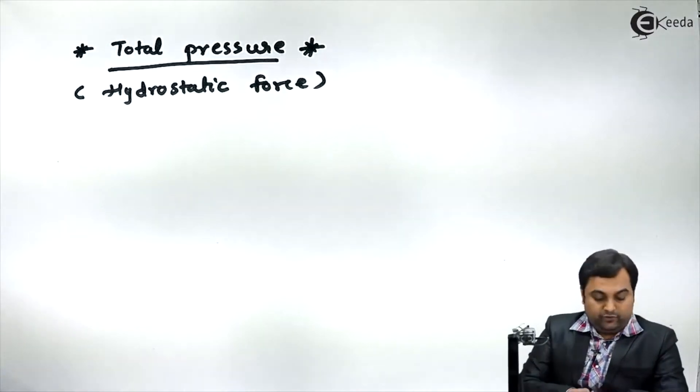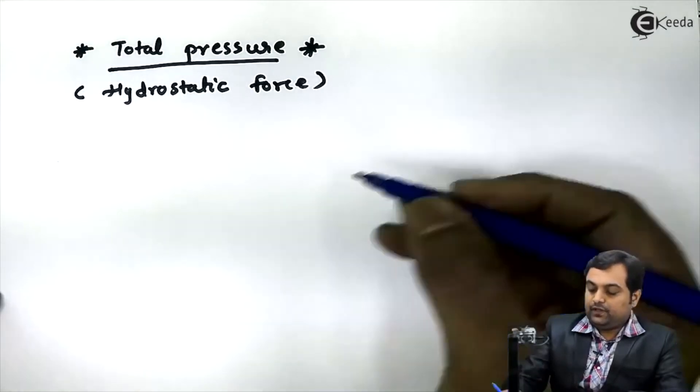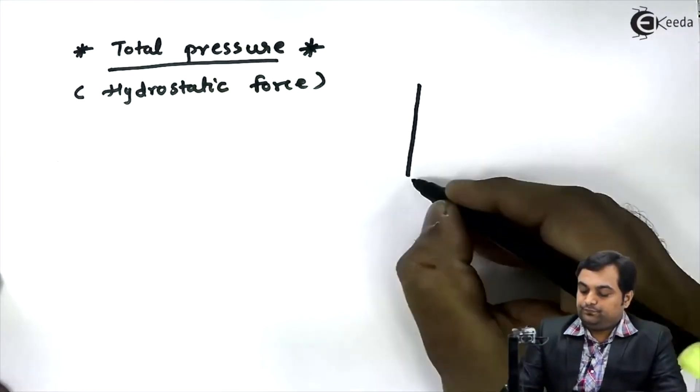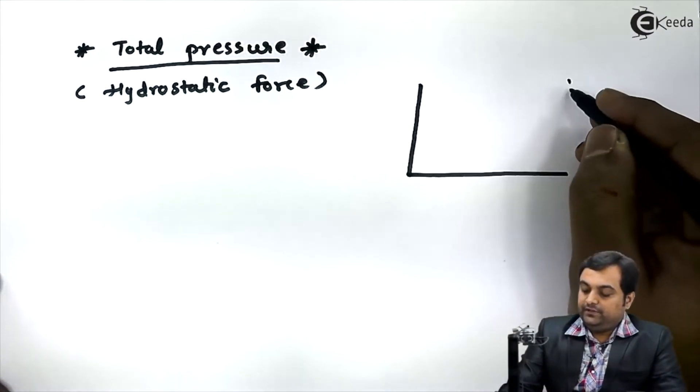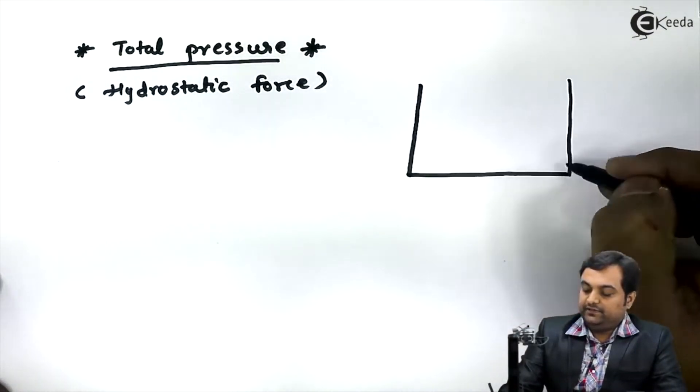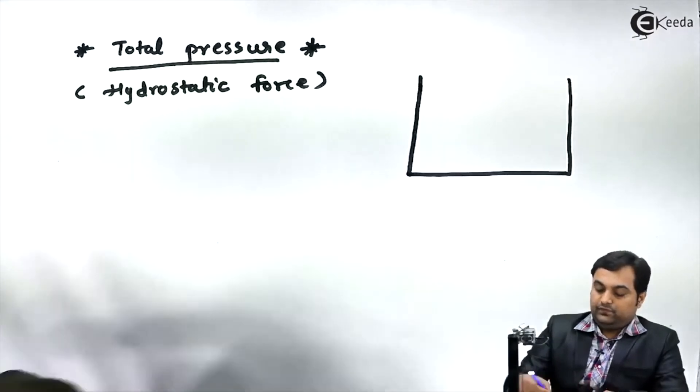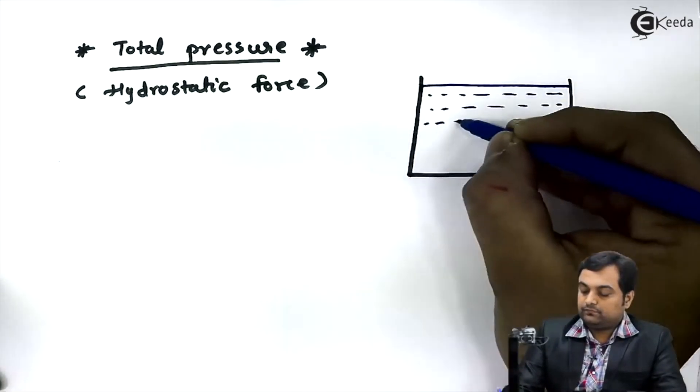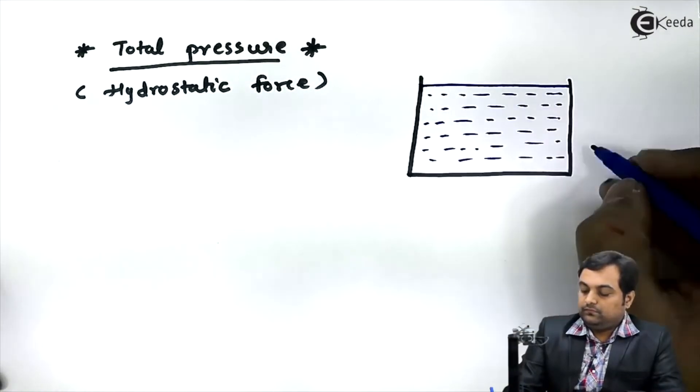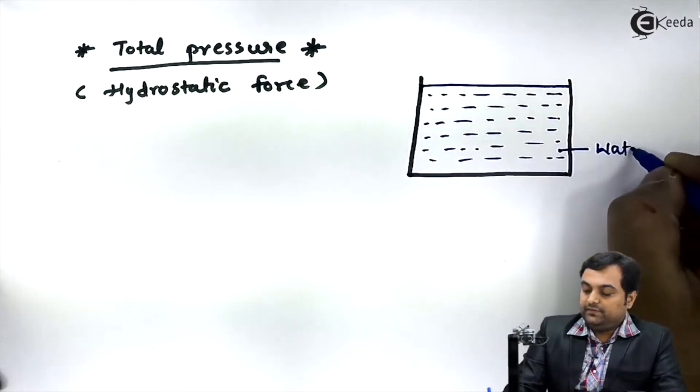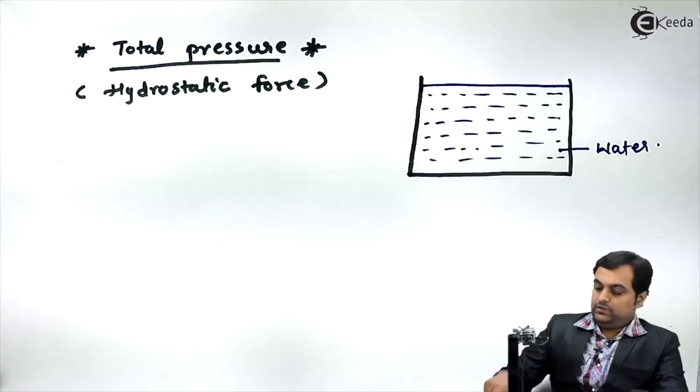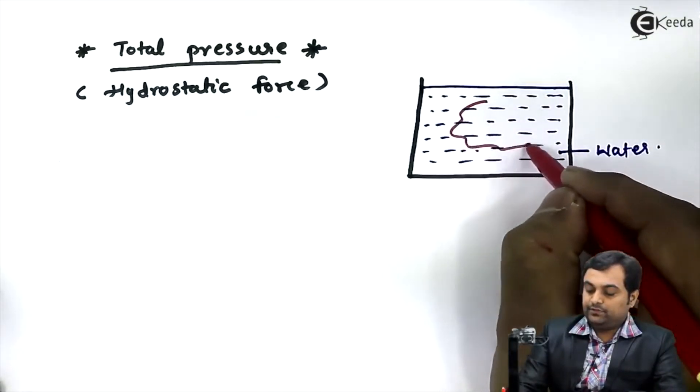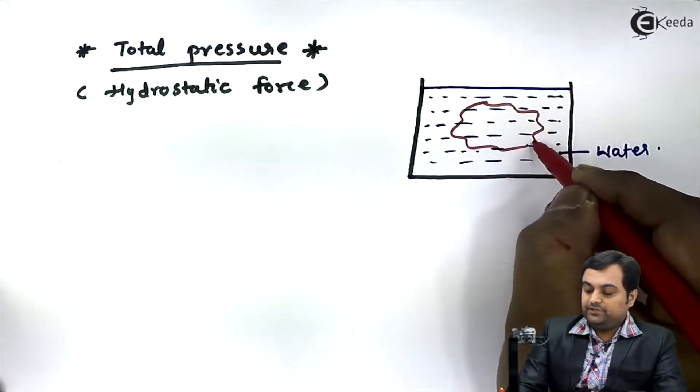Now for total pressure, the assumption is that we have a tank filled with water. Next we have a body of any given shape - the shape is arbitrary.